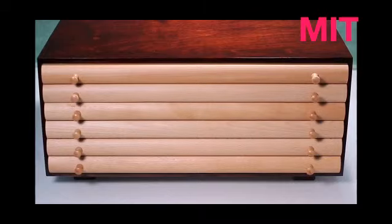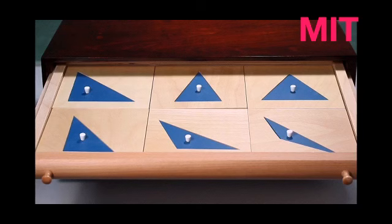Drawer one contains six triangles: an equilateral, acute angled isosceles, right angled isosceles, obtuse angled isosceles, right angled scalene, and an obtuse angled scalene.